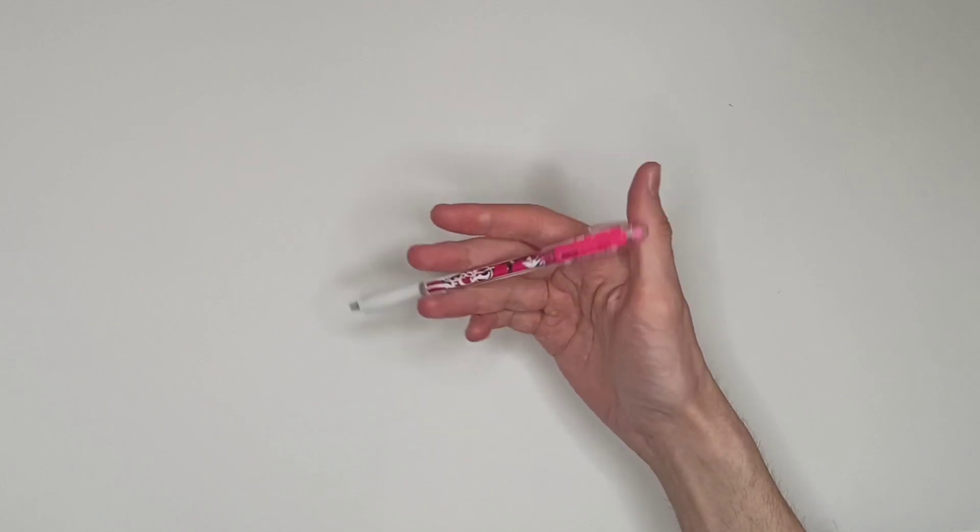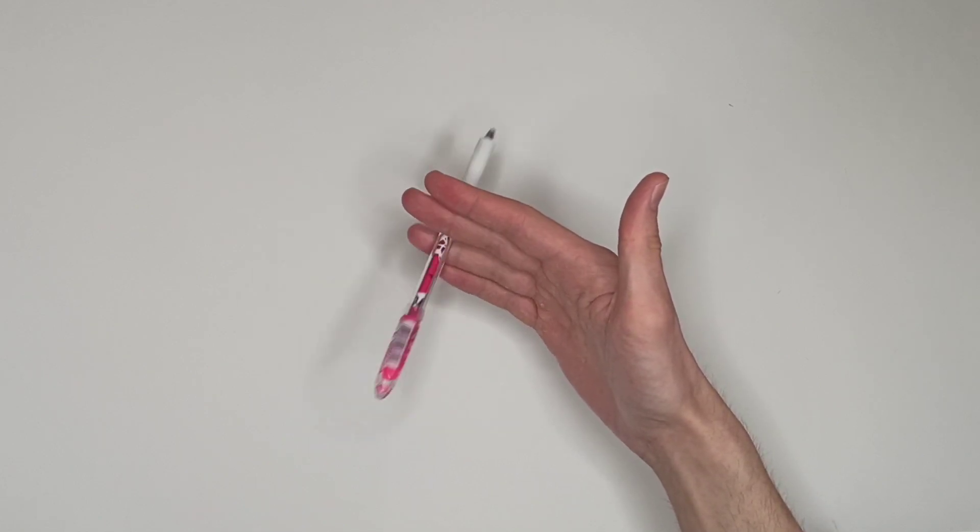From this position you should be able to twist the pen using your ring finger, just like this.